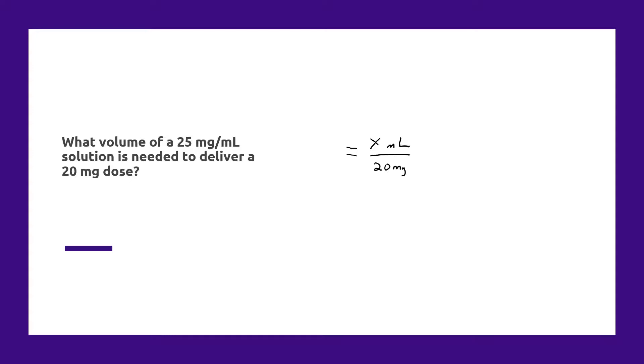This is a little tricky if you set this up because we have our unknown as milliliters. We need to match that on the left-hand side. So we know that one milliliter has 25 milligrams based on the strength that's given to us in this question.